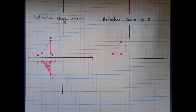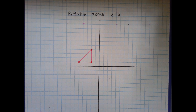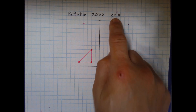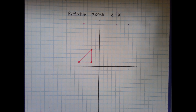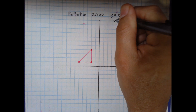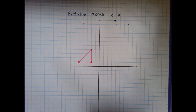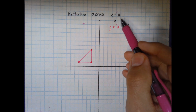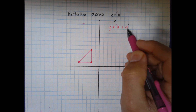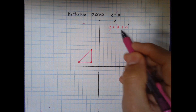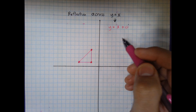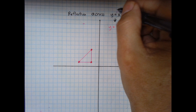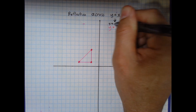I connect the dots and shade in the new shape — that's the reflection over the x-axis. Now for a reflection across the graph of y equals x, it's a little different because we're reflecting across a line rather than an axis. Let me rewrite it: y equals x is the same as y equals x plus zero, which is in slope-intercept form y equals mx plus b, where m is the slope and b is the y-intercept.